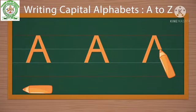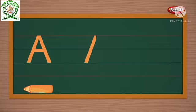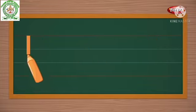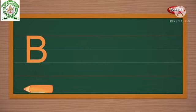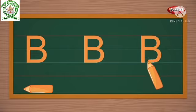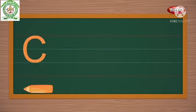How to write the alphabets. A: one slanting line, another slanting line, and a sleeping line makes A. Now let's write B: standing line, curve, another curve makes B. Now let's write C: a curve is called C.